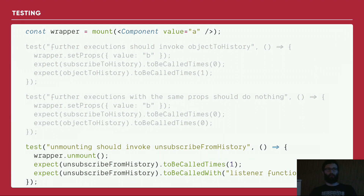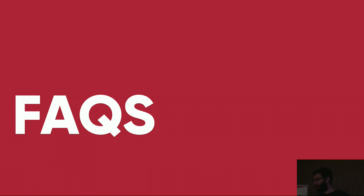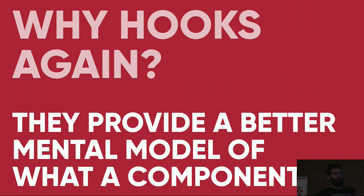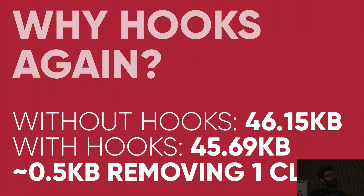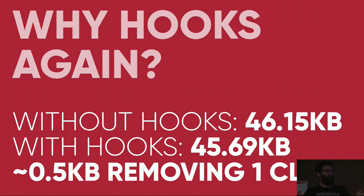At this point I've given you a lot of information about hooks, so let me address the key questions. Why hooks? The main reason is that they provide a better mental model of what a component is. But there's another reason: size. Classes are very large, and when compiled, there's a lot of boilerplate. Babel handles classes in an expensive way. In my example — a tiny app — just by removing one class, I got a 0.5 kilobyte improvement. In a complex app with many components, this adds up.